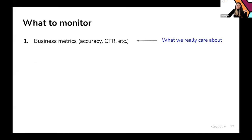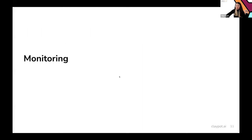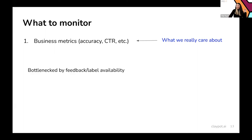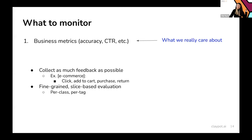That brings us to the next topic: monitoring. The first question we need to address is what to monitor. What companies really care about when they have a machine learning model is business metrics like F1, accuracy, and click-through rate. However, it's pretty hard to monitor business metrics directly because usually you need a lot of labels or feedback from users, and not every task has immediate labels or feedback.